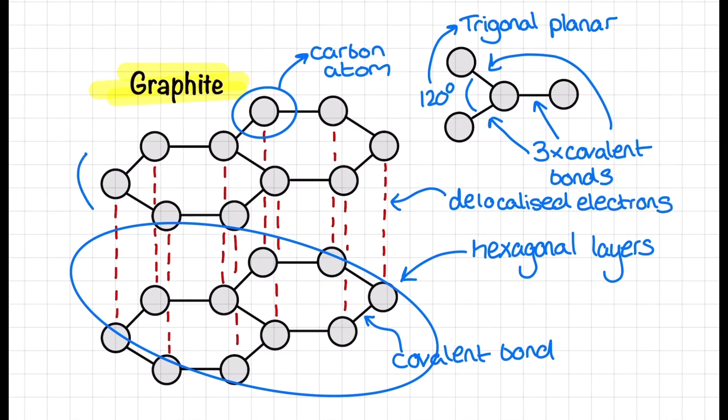Well the fourth electron becomes delocalized between the layers which means that graphite is a good conductor of electricity along the layers because of these delocalized electrons.